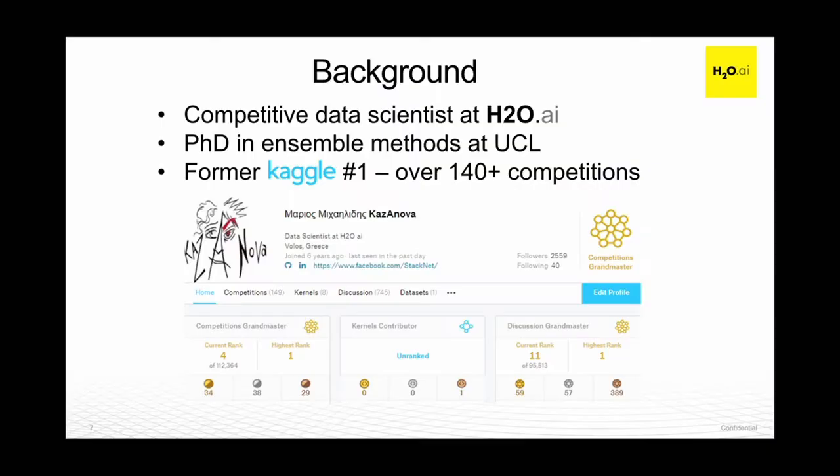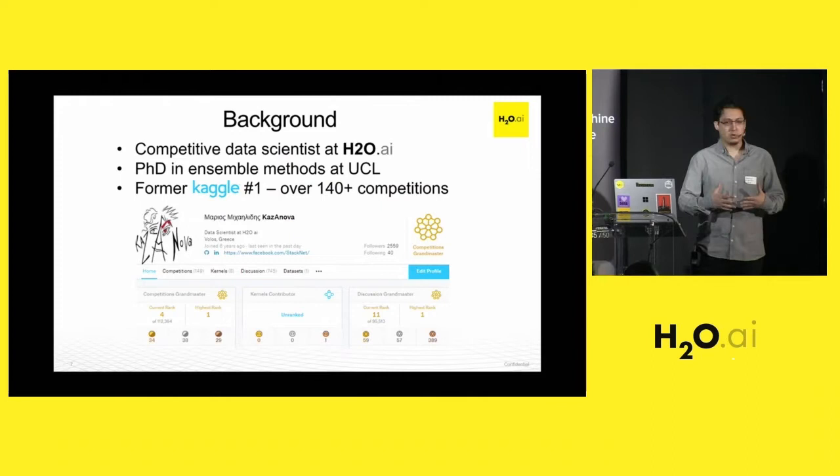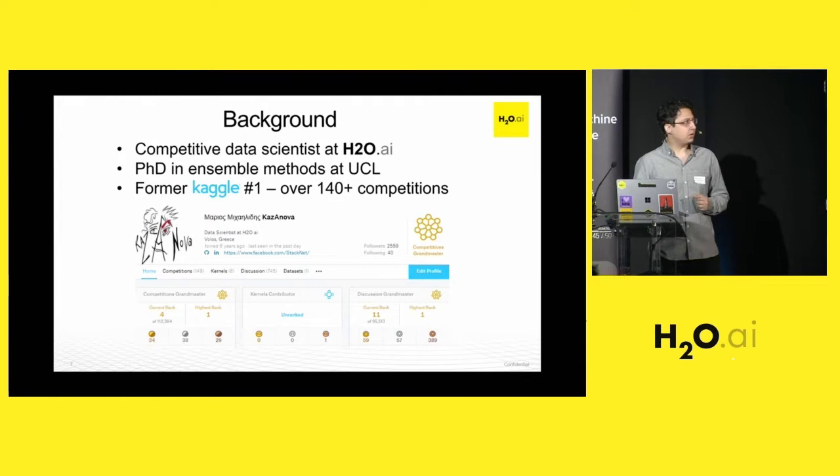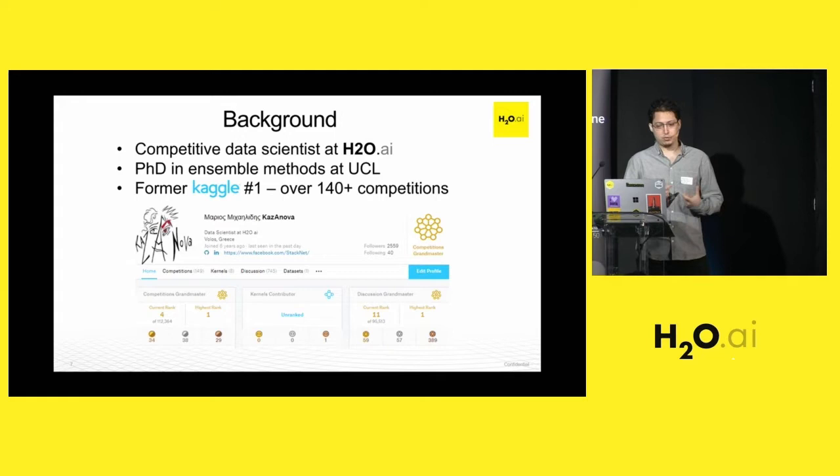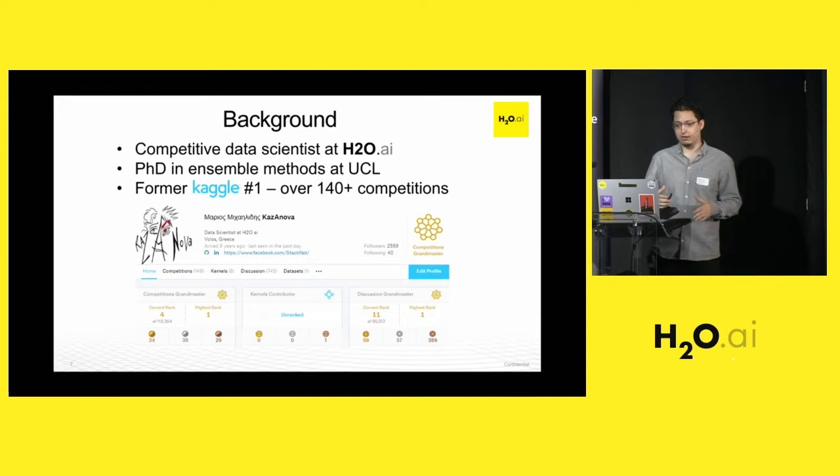Just a few words about me. I work as a competitive data scientist for H2O. H2O is a company that primarily creates software in the predictive analytics space and machine learning. My main job is to make them as predictive as possible. I've done my PhD in machine learning at the University College London. My focus was on ensemble methods, how we can combine different algorithms to get a stronger, better prediction.